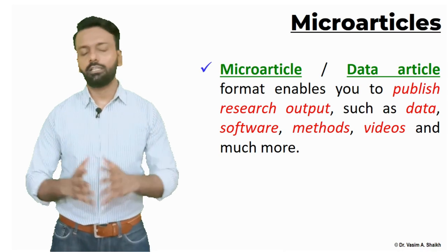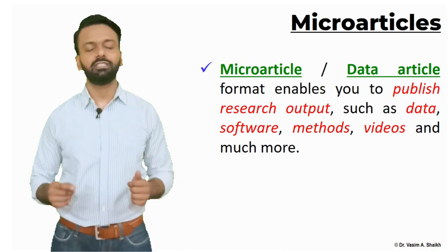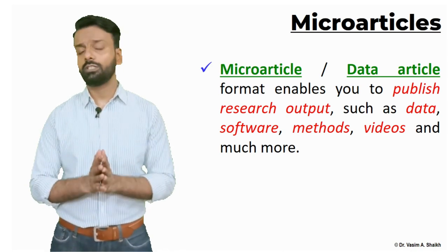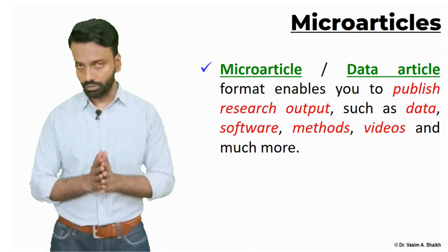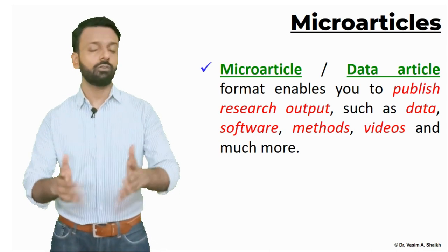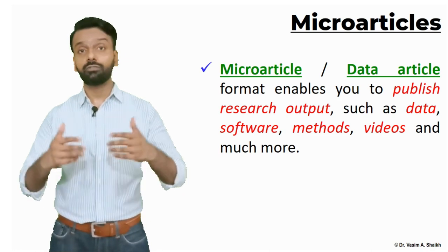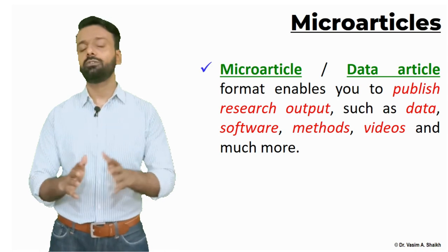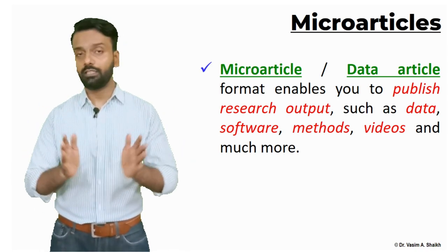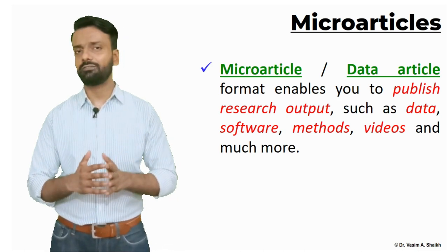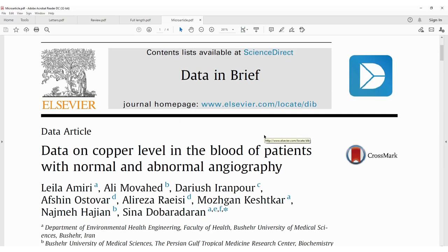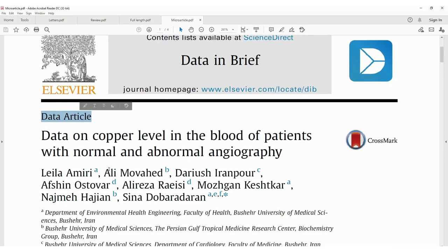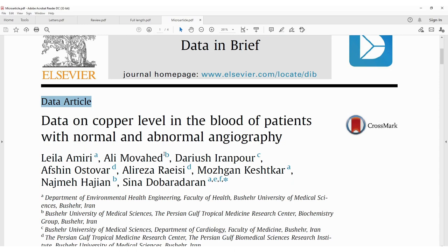The fourth and last type is the micro article or data article. In this article you are only publishing the data — no other information. The format is such that you are only publishing the research output, which can be data, software, a method, videos, and so on. There are a few lines or paragraphs describing the data, but mainly it is only a data article. The article itself is labeled as a data article from the outset.